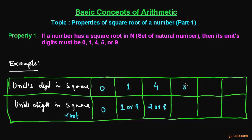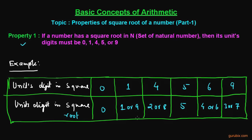If the unit digit in a square is 5, then the unit digit in the square root would be 5. If the unit digit in a square is 6, then the unit digit in the square root would be 4 or 6. And if the unit digit in a square of a number is 9, then the unit digit of the square root of that number would be 3 or 7. So you can understand this property by this table in a better way.